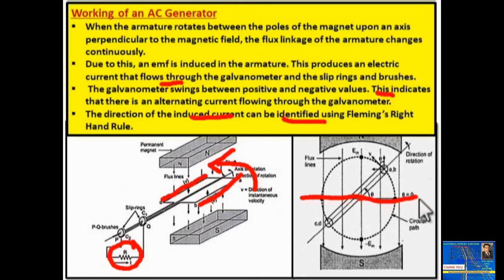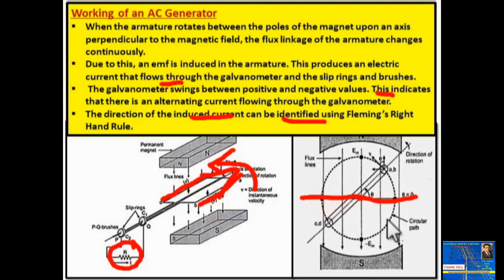We consider theta equal to ωt, which is zero degrees here. This is the plane of the rectangular coil currently at the zero-degree position — this is called the parallel position, so no induced EMF will be there at this point. The coil then starts moving from zero degrees; this is the AB side and this is the CD side.